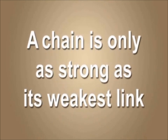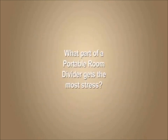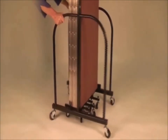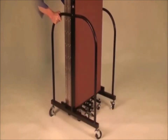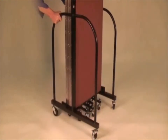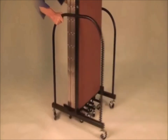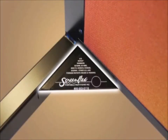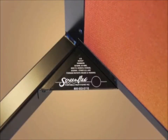Customers often want to know what part of a portable room divider gets the most stress. First, the point where the end supports intersect with the panels gets all the twisting and turning stress when the divider is being pulled or pushed from place to place. Thus, a strong continuous connection screwed from two directions, in conjunction with gusset plates at this intersection, is absolutely critical to the divider having a long useful life.